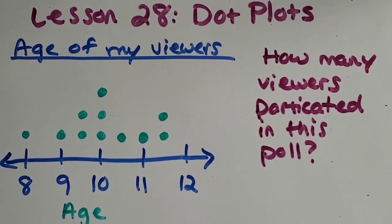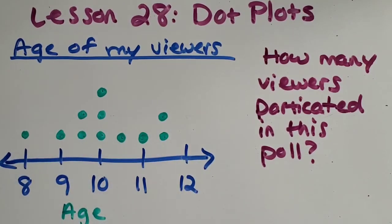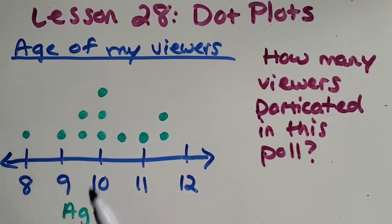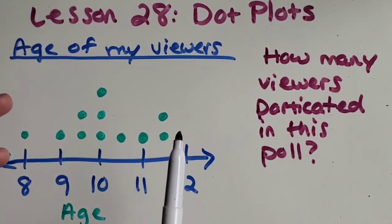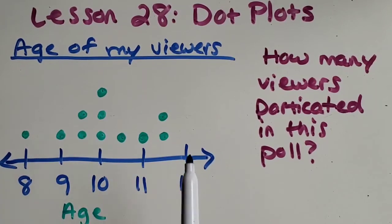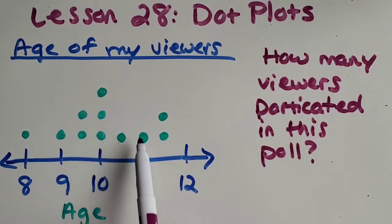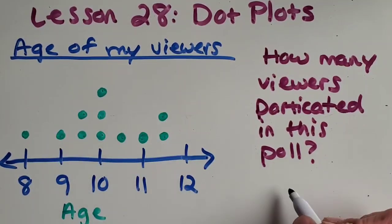Here's another question for you. How many viewers participated in this poll? So pause the video and see what you think. How can you find out how many viewers participated in this poll? Okay, so if you think about it, each dot is a person. So if we just count up all the dots, we'll know how many people participated. So we've got one, two, three, four, five, six, seven, eight, nine, 10, 11 people participated in the poll. Good job.